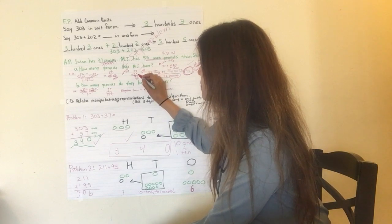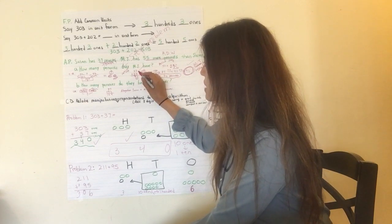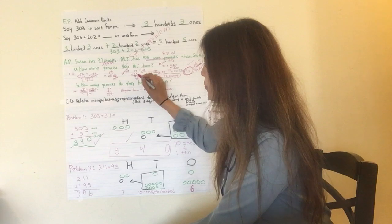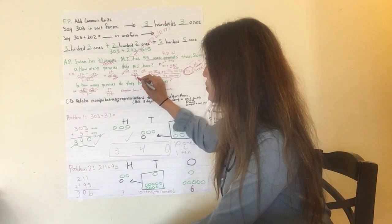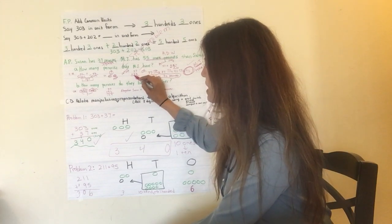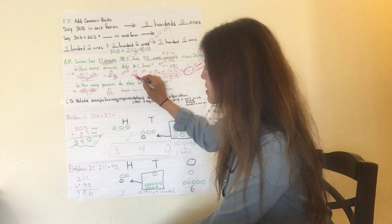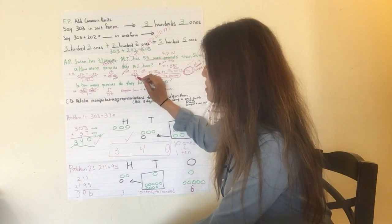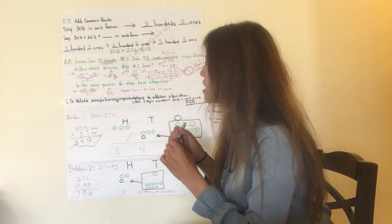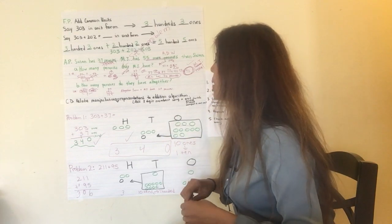So 37 plus 55. Start with the ones column. 7 ones plus 5 ones is 12 ones. I'm going to conduct the unit switch. I'm going to keep the 2 ones. I'm going to take the 1 ten over there into the tens column. 3 tens plus 5 tens plus 1 ten is 9 tens. That's 92. Good job.